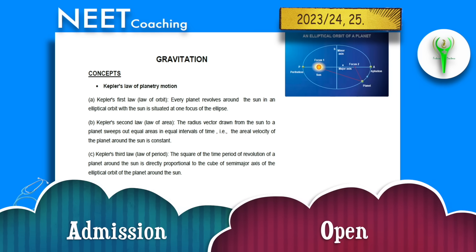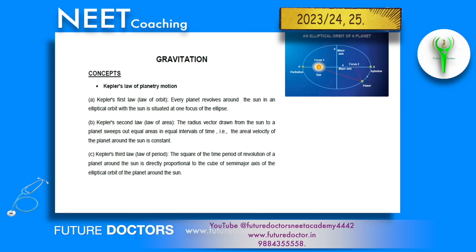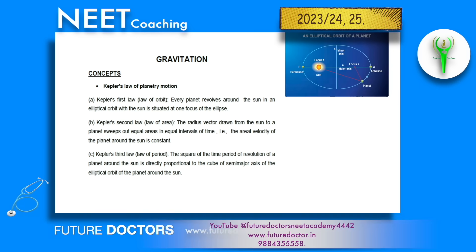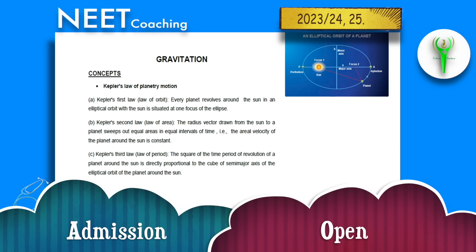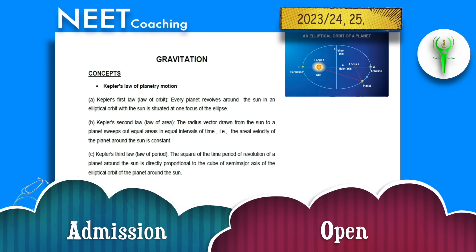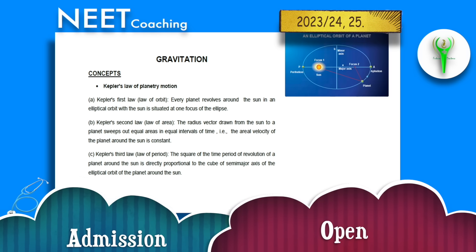Kepler's first law of planetary motion, also called the law of orbit. The first law of planetary motion states that every planet revolves around the sun in an elliptical orbit, where the sun is situated at one focus of the ellipse.